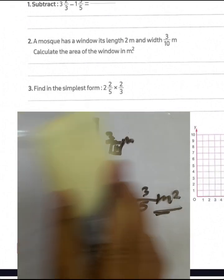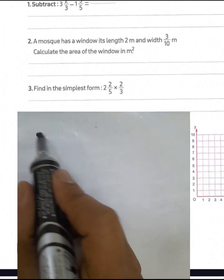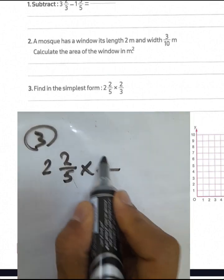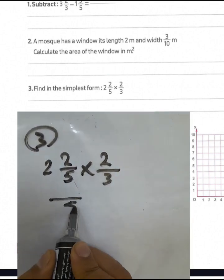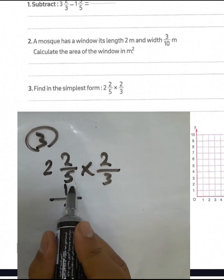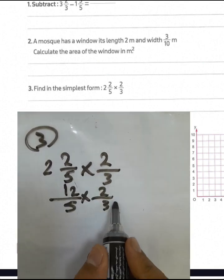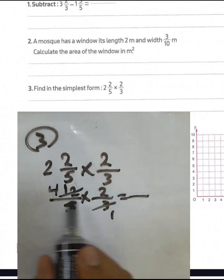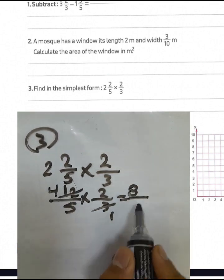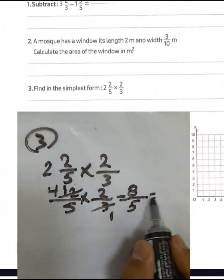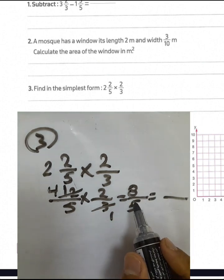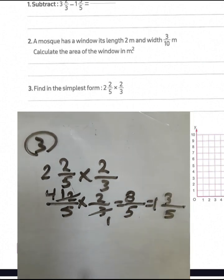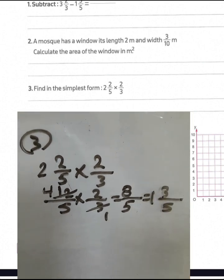Question number 3: find the product of 2 and 2 over 5 multiplied by 2 and 2 over 3. Write 5 in the denominator: 2 times 5 equals 10, plus 2 equals 12 over 5. Multiply by 8 over 3. 3 divided by 3 equals 1, and 12 divided by 3 equals 4. Then 2 times 4 equals 8, and 1 times 5 equals 5. We have an improper fraction — convert 8 over 5: 8 divided by 5 equals 1 with remainder 3. So the result is 1 and 3 over 5.